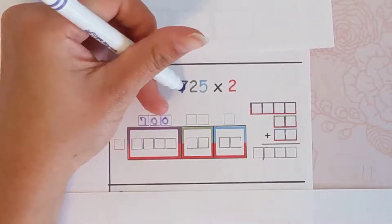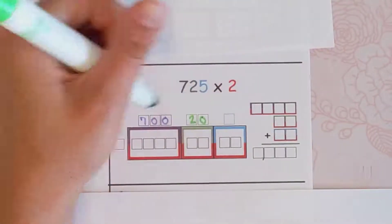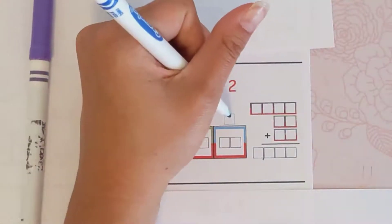So 725 is really 700—that's the purple—7 stands for 700, the 2 is really a 20, and then the 5 is a 5.